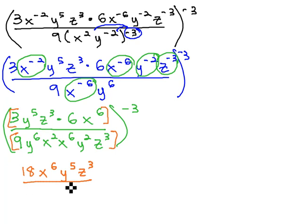We have a 9, and then sticking with alphabetical order, on the x's, the product rule says we can add the exponents. 2 plus 6 is 8. On the y's, we add the exponents, 6 plus 2 is 8, and then we also have the z cubed, and the entire thing is to the negative 3 power.